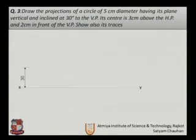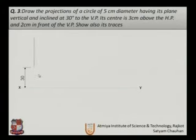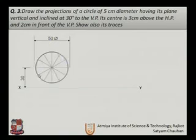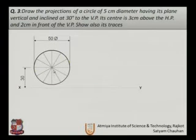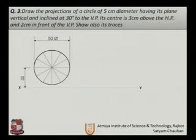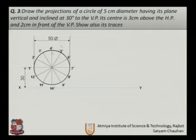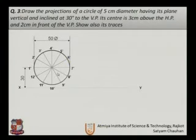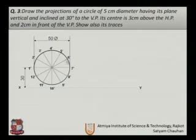First, draw the XY line and use the projection of points to draw the initial position of the circle. Draw a circle with its center 30 mm above the XY line, with a diameter of 50 mm, and divide it into 12 equal parts. Since the inclination is given with reference to the VP, the true shape of the circle is obtained above the XY line, labeled 1′ through 12′.